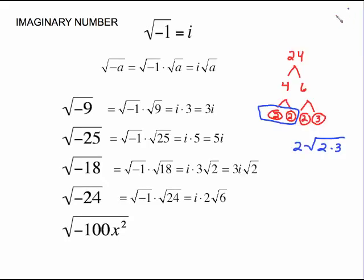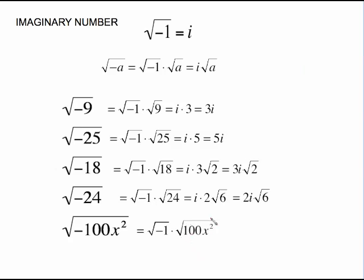If there's a variable, it's still going to be the same procedure. I'm going to write it as the square root of negative 1 times the rest, which is the square root of 100x². It just so happens this is a perfect square. So we have an i coming out. The square root of 100 is 10, and then the x, which we'll rewrite as 10ix. It would be okay to write it as 10xi. There's nothing special about that order, except that the coefficient should come first.